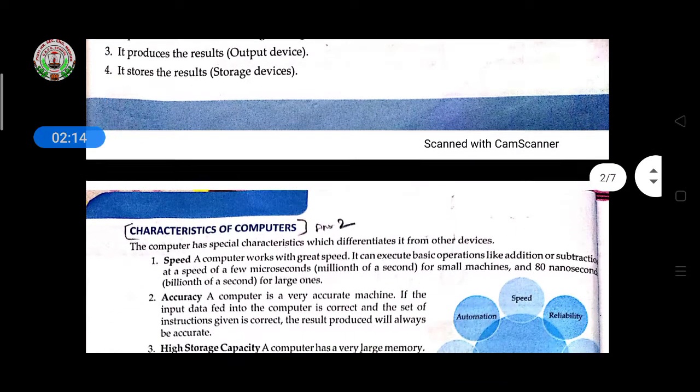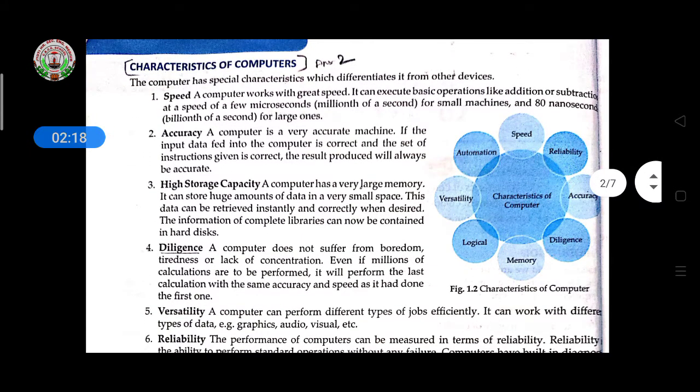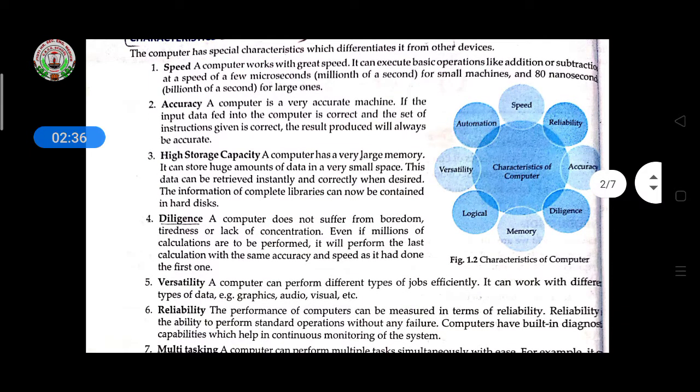Characteristics of computer - some special characteristics are there. First one is speed. A computer works with great speed. It can execute basic operations like addition, subtraction and show the result in very microseconds.